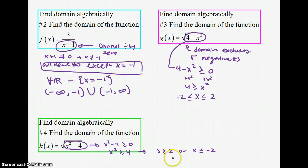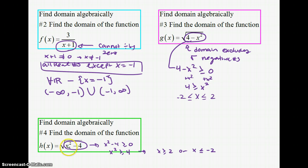Plugging in x = 3 gives 9 − 4, and we can take the square root of that. But plugging in x = 1 gives 1 − 4, and we'd be taking the square root of a negative number. x = 2 and x = −2 are okay because squaring them gives 0 underneath. Numbers too small — between −2 and 2 — produce negatives. Domain excludes fractions causing division by zero, or square roots of negatives.